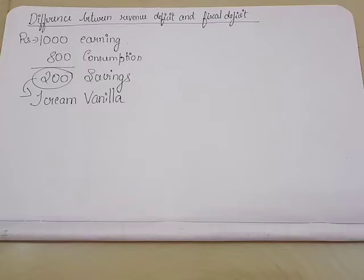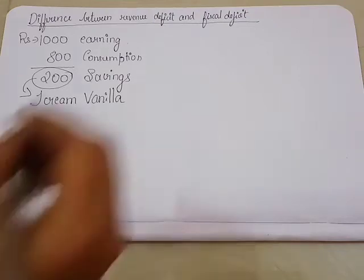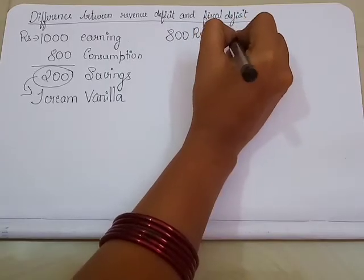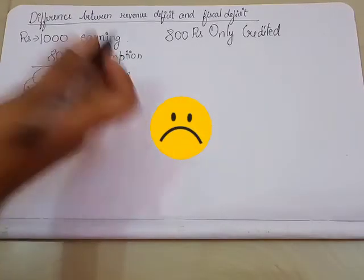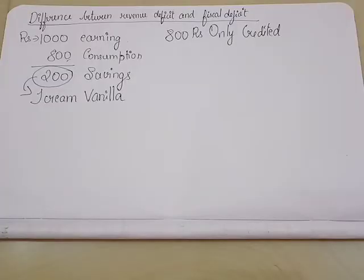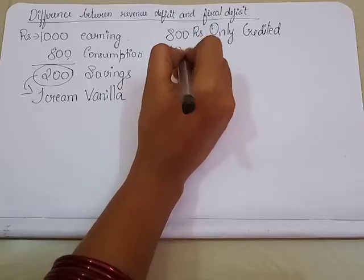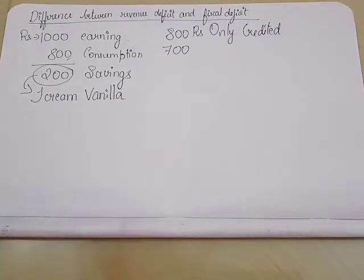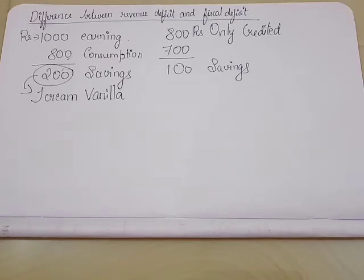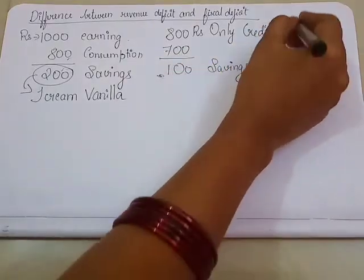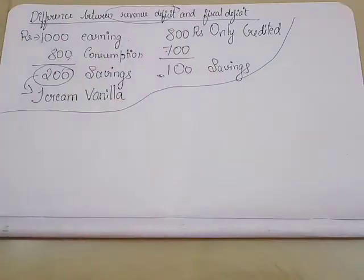Now, what happens at the end of the day? When only 800 rupees is credited to my account, I know that my consumption is 800 rupees. So I make a small reduction — I reduce 800 to 700. So 800 minus 700 means I saved only 100 rupees. Now, my plan was to save 200 rupees and buy that vanilla ice cream box, but I have only 100 rupees with me by the end of the day. Whatever story we saw till here — this is the concept of revenue deficit.